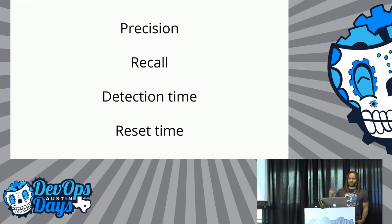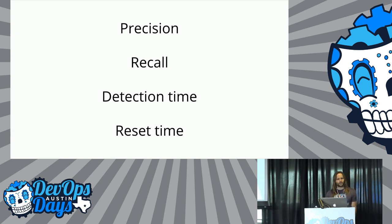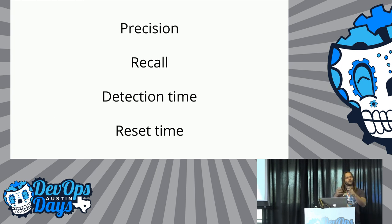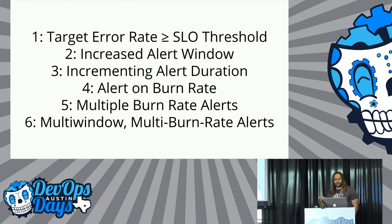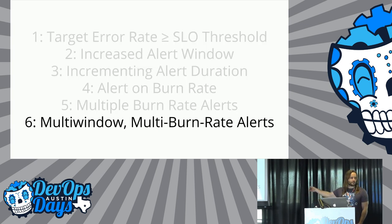When designing alerts, these are the considerations taken into account to decide what is better. Precision: the proportion of events detected that were significant — an alert triggered and it's a real event. Recall: the proportion of significant events detected — a real event occurred and it triggered an alert. Detection time: how long it takes to send notifications in various conditions. And reset time: how long alerts fire after an issue is resolved. We will progress through six increasingly complicated methodologies, and the answer will be multi-window, multi-burn rate alerts.